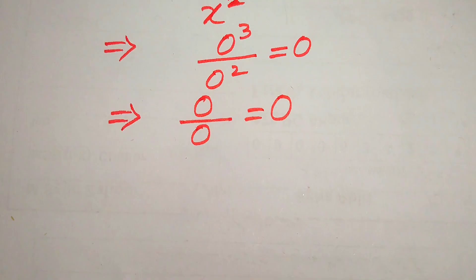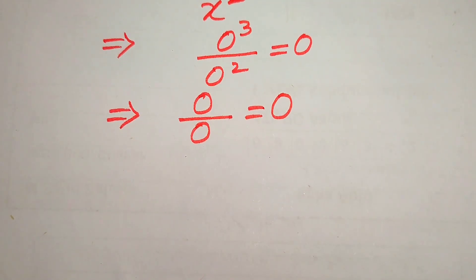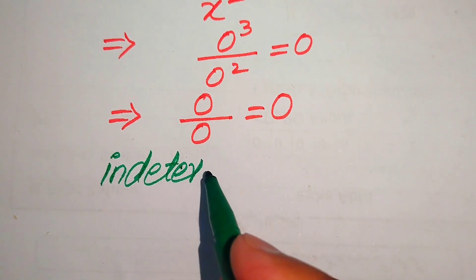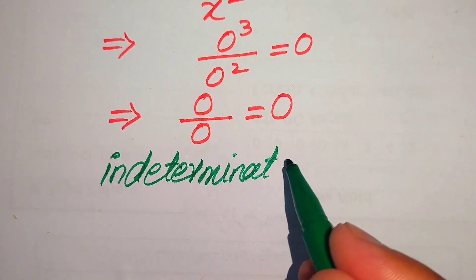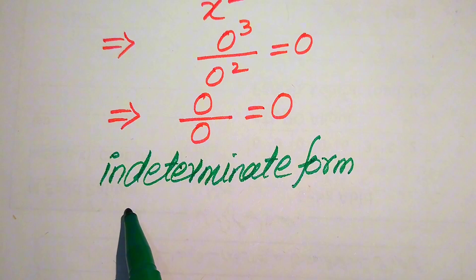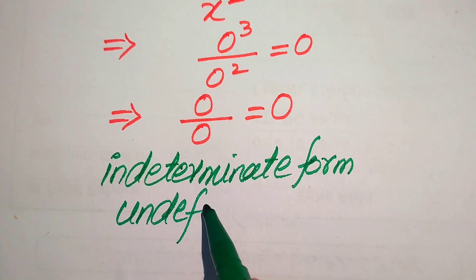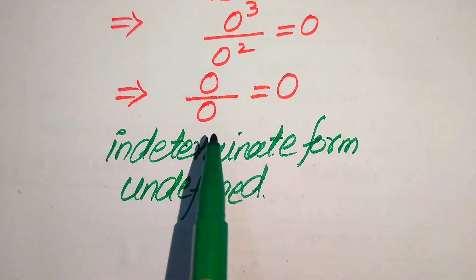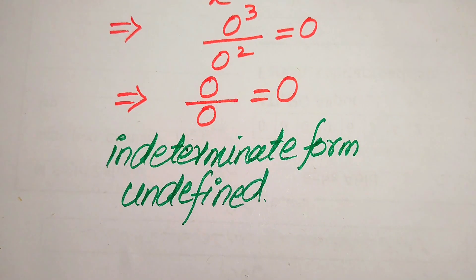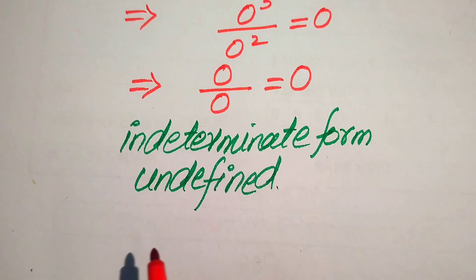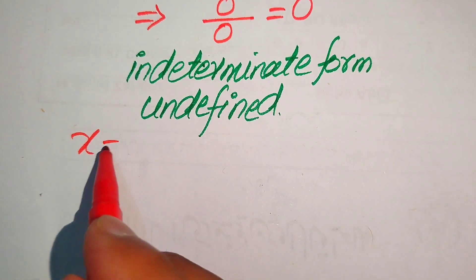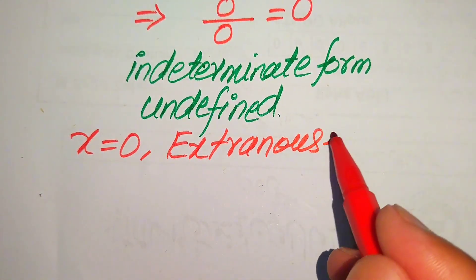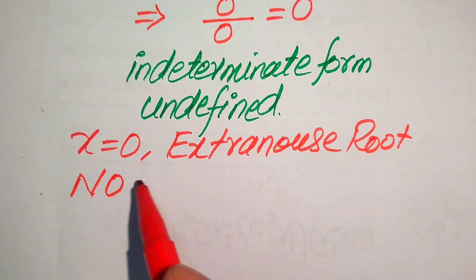So the whole equation becomes 0 over 0 equals 0. On the left-hand side we have a 0/0 form, which is also called the indeterminate form — or in other words, the undefined form. If our left-hand side is undefined, this means that the value x equals 0 does not satisfy our given question statement. So x equals 0 is the extraneous root of the given equation, and this equation has no solution.